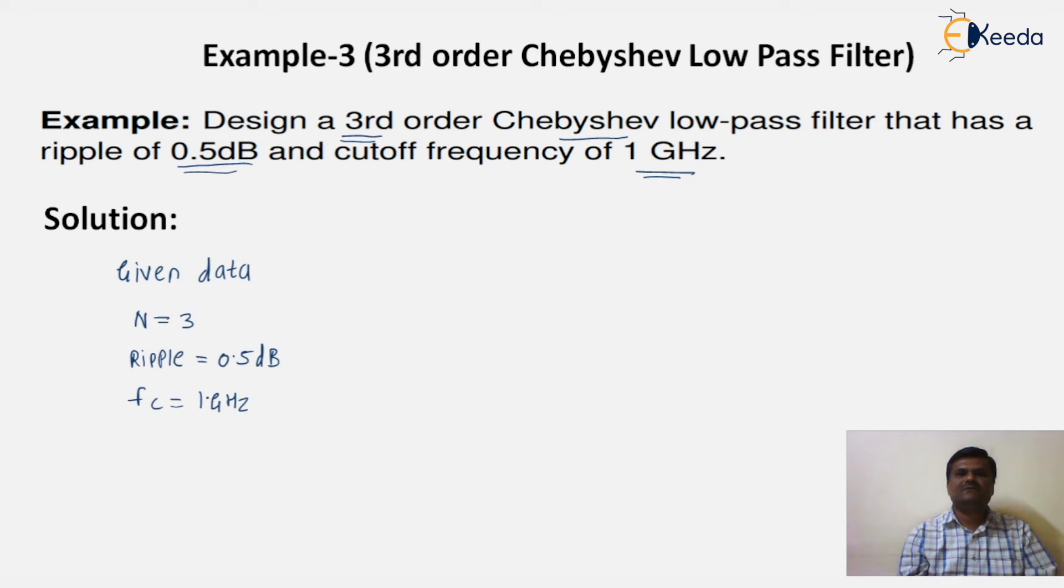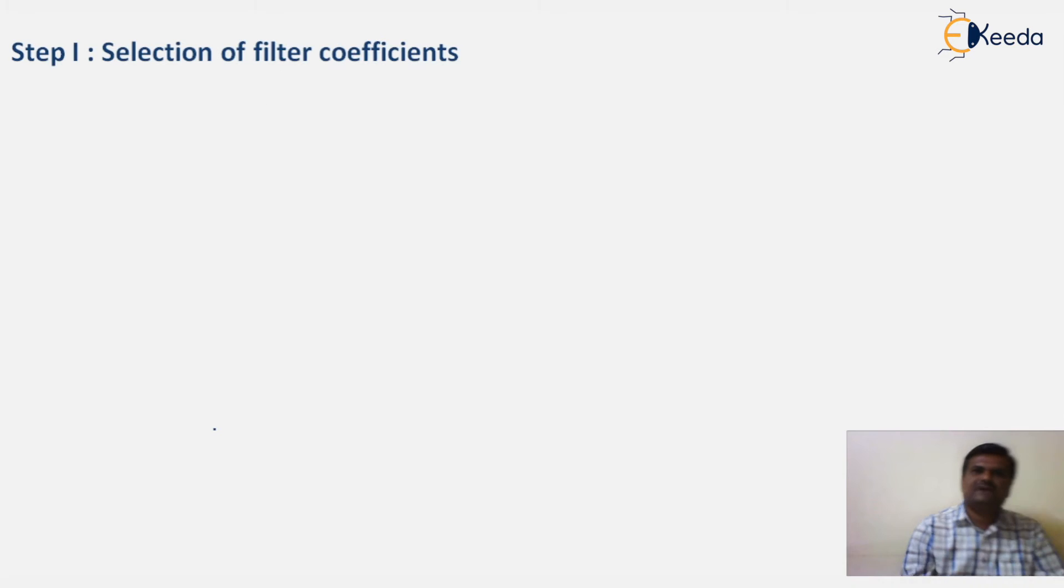At the same time, we require an R0 value. They have not given R0, so we assume R0 equal to 50 ohm. These are the given data.